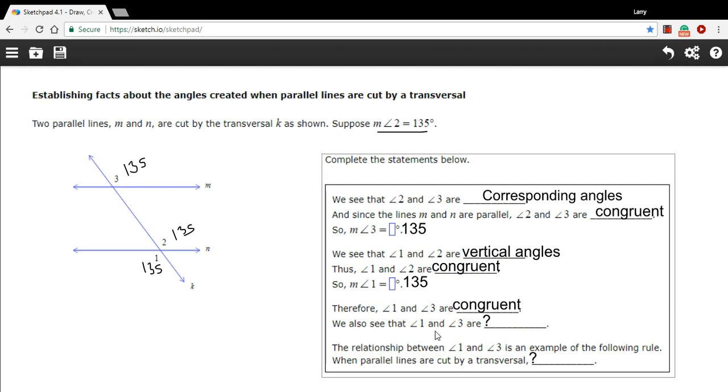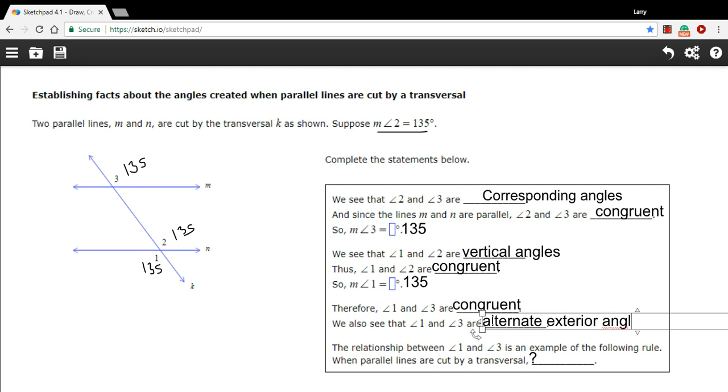We also see that angles 1 and 3 are what? Well, they are, as I mentioned before, they are alternate exterior angles.